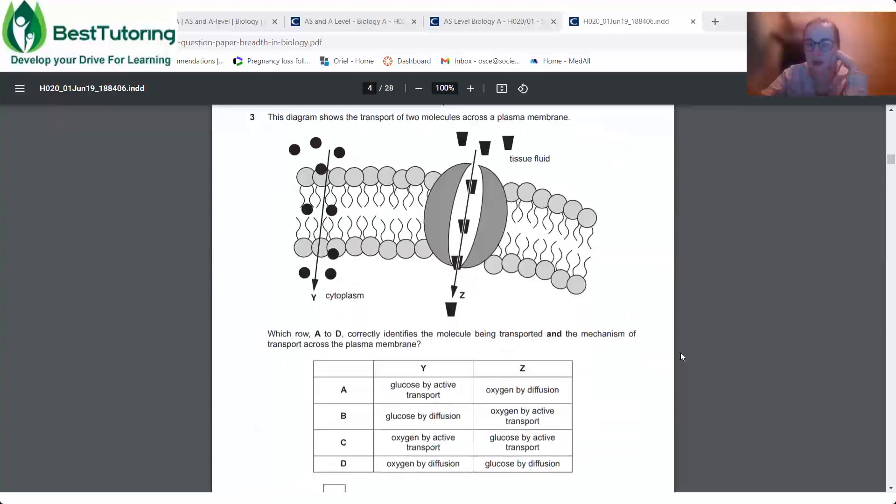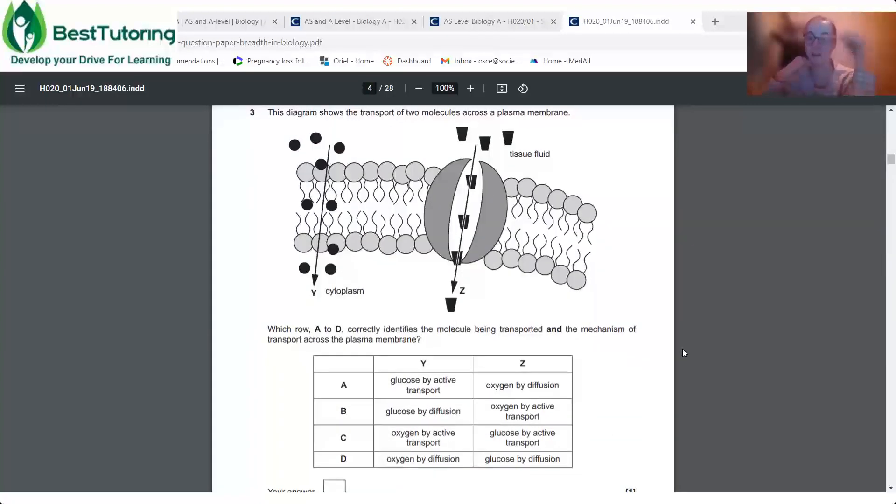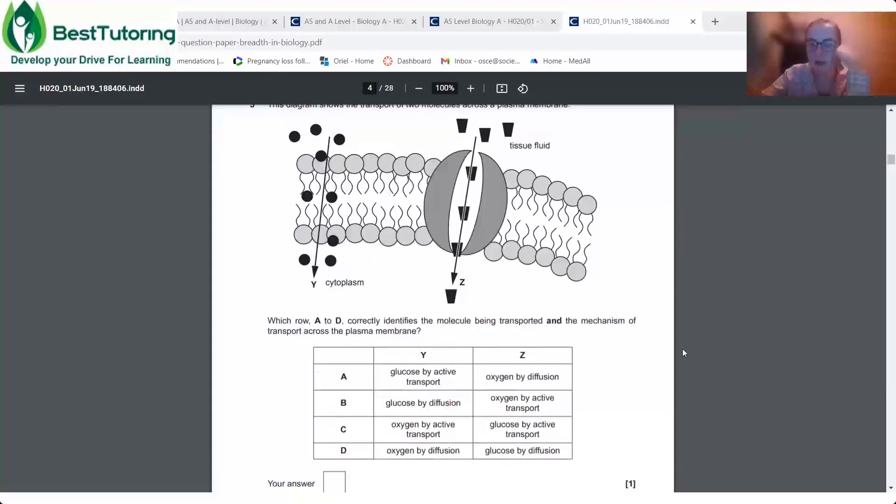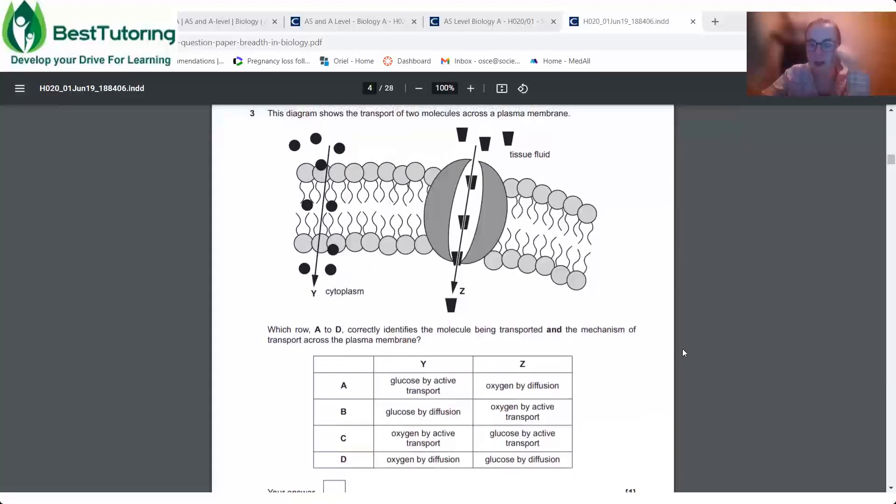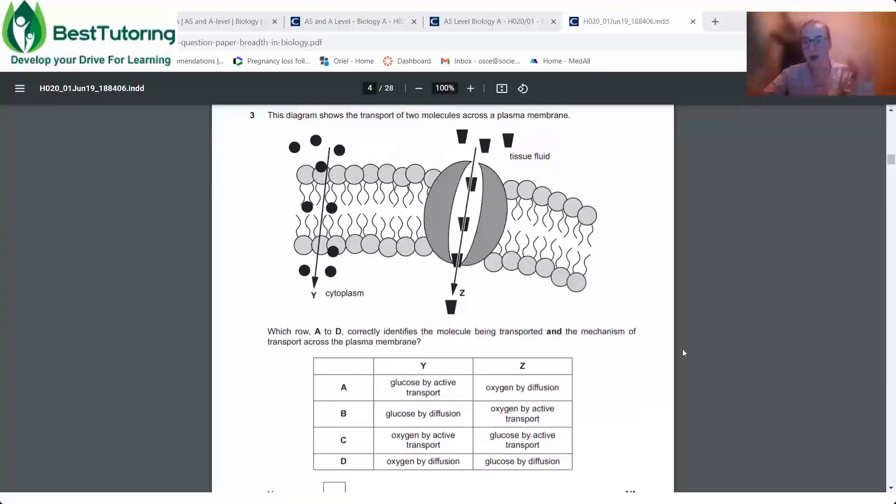Okay, great. So this diagram's showing a transport across the cell membrane again. Okay, so we don't need to scroll down anymore. Okay, so we've got two. We've got Y and we've got Z, all right? We need to know what molecule it is and what process we're moving it by. So have a think. Is it going to be A, B, C or D? We'll give you 20 more seconds, just so everyone has a go.